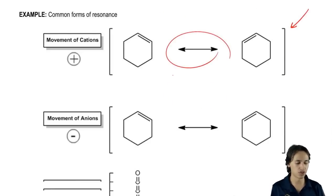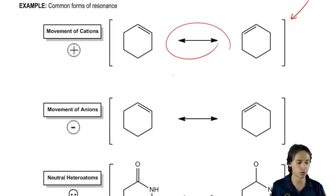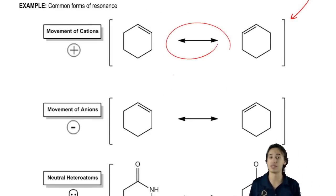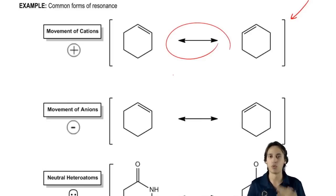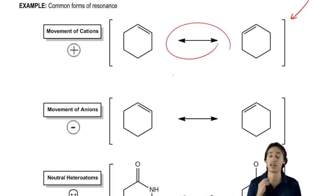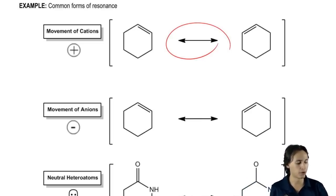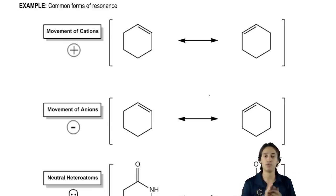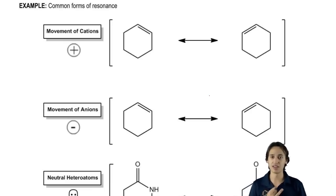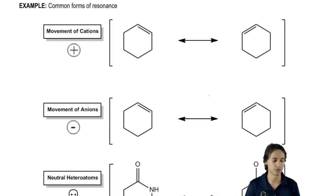What I want to do now is talk about common forms of resonance. These are patterns that I've basically discovered while teaching organic chemistry and I want to share these with you. So let's talk about three right now: movement of cations, anions, and then neutral heteroatoms.